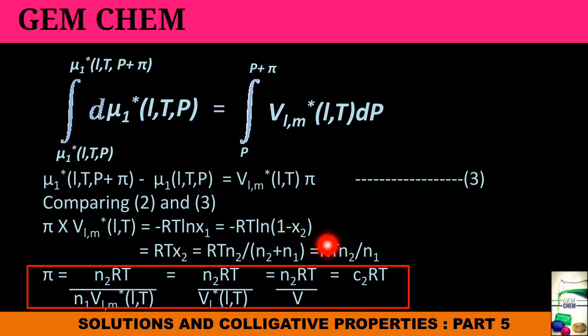If we try to ignore the number of moles of n2 in the downside, then we can say that RT n2 by n1. So ultimately we get this part of expression, and if we evaluate it further, we will get that pi equals to c2 RT. Complete derivation is being shown in this video. You have to understand each step.